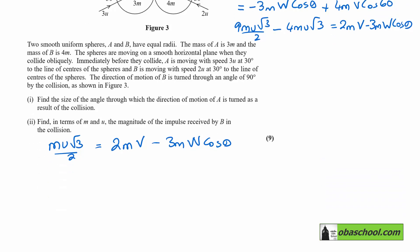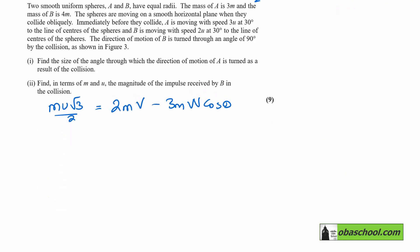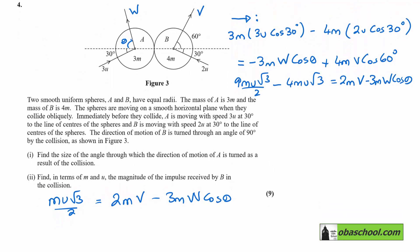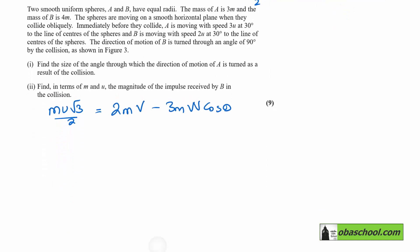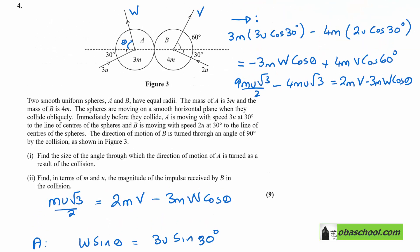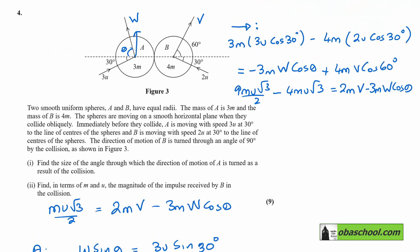Now, since there is no component of the impulse which is perpendicular to the dashed line, the vertical velocities or the velocities up the page, up and down the page must be the same before and after. So in other words, w sin theta would be equal to 3U sin 30. So what we're saying there is the component of speed this way after is equal to the component before, like so.